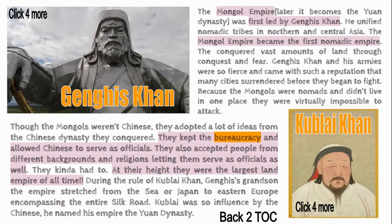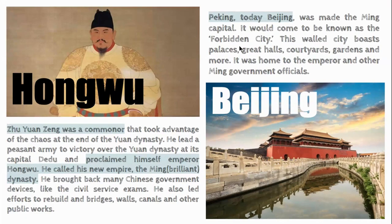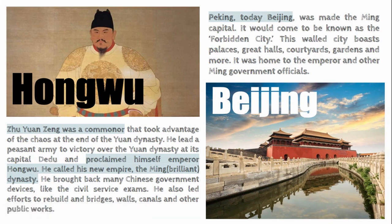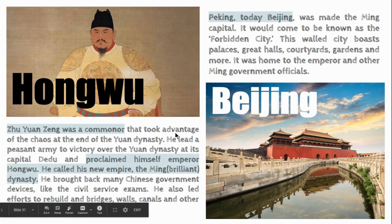The Ming dynasty's capital was Peking — today known as Beijing — which was a walled Forbidden City housing palaces, great halls, courtyards, and gardens. Zhu Yuanzhang was a commoner who led a peasant army to victory over the Yuan dynasty and proclaimed himself Emperor Hongwu. He brought back Chinese government practices like the civil service exams, which the Yuan had eliminated, and led efforts to rebuild bridges, walls, and canals.